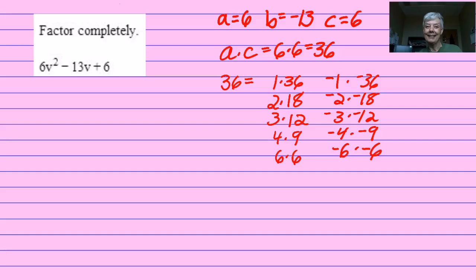I need to choose the two factors that will add up to the middle number B, which is negative 13. That would be negative 4 and negative 9, because negative 4 plus negative 9 equals negative 13.